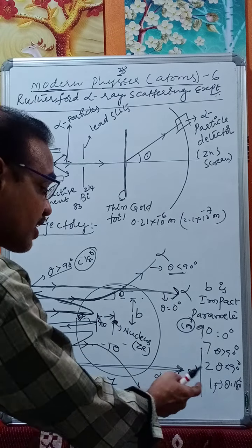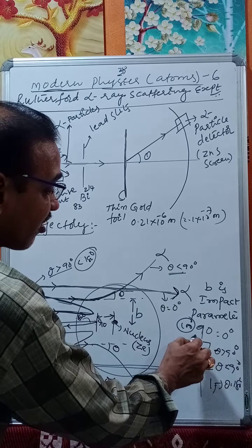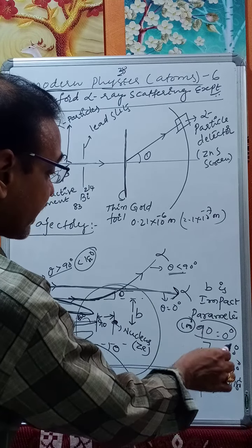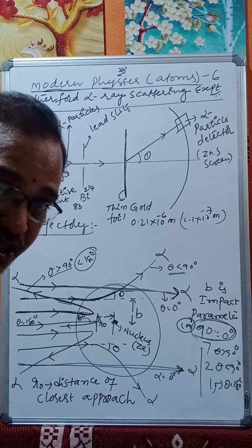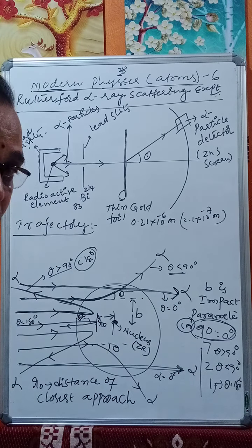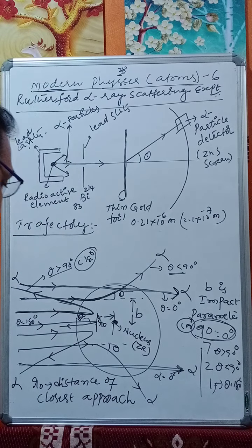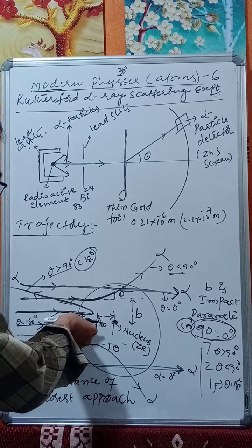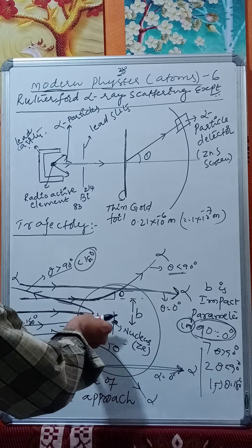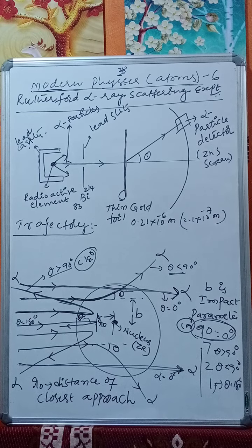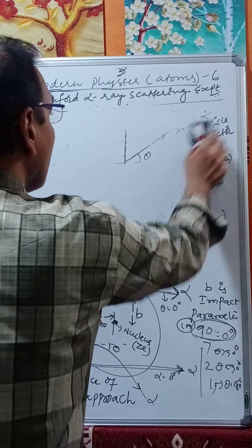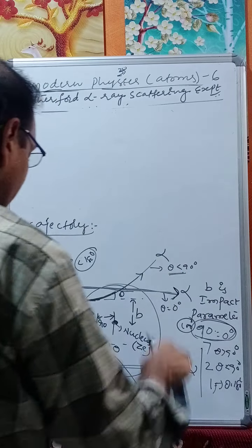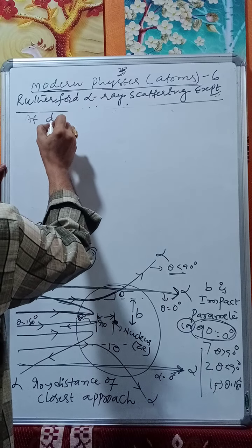Most alpha particles scatter at θ = 0° and the least number scatter at θ = 180°, with intermediate numbers between 0° and 90° and between 90° and 180°. The concept of distance of closest approach comes from the alpha particle heading straight toward the nucleus, being repelled, and retracing back.